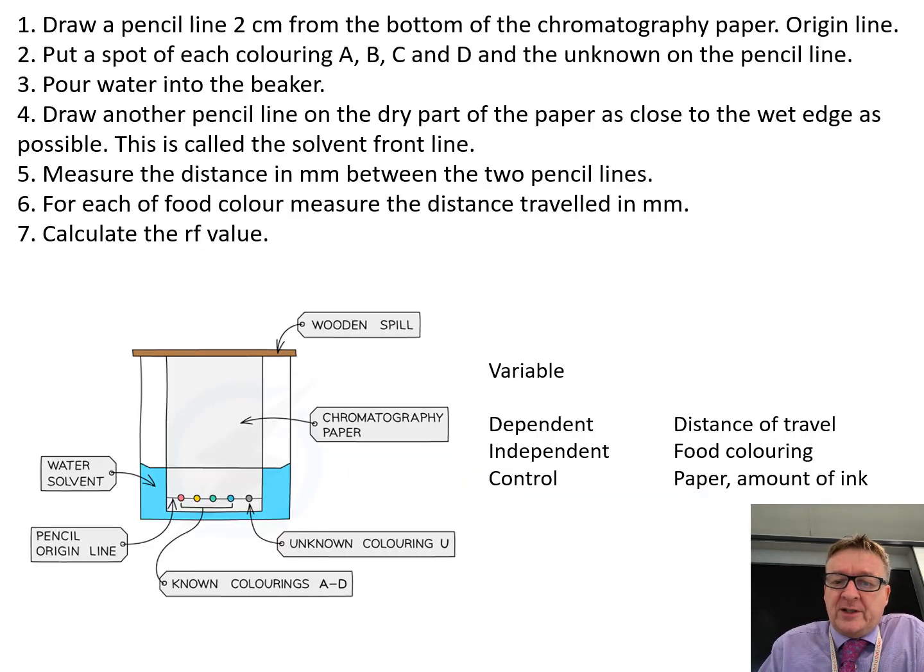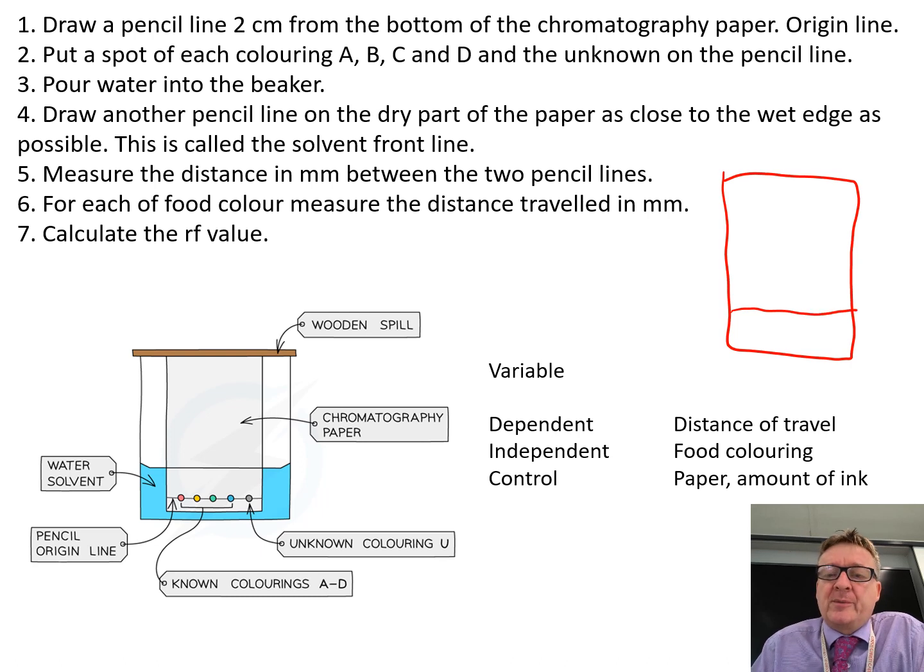What you do is get your piece of chromatography paper and draw a pencil line two centimeters up from the bottom. That is called your origin line. Make sure you're doing it in pencil because if you do it in ink the ink itself could move.